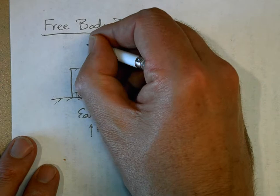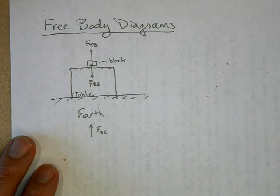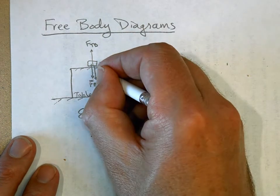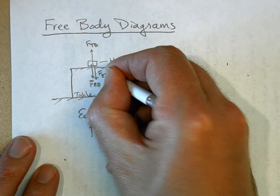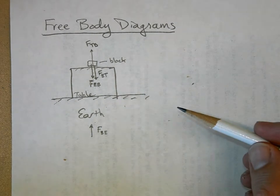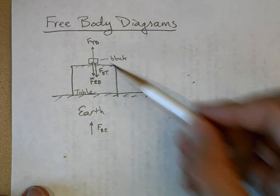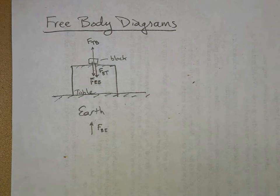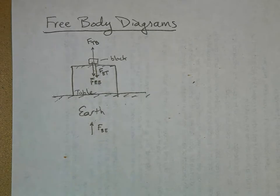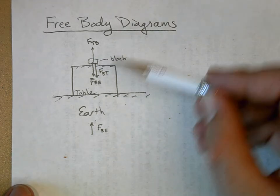The table pushes up on the block — this is the force of the table on the block. But for every force on one object, there's a force on the other object. So obviously the block is pushing down on the table — this is the force of the block on the table. This is what we call an interaction diagram. It shows all the interacting forces that are involved. I could draw the earth pulling down on the table and the table pulling up on the earth, but I'm going to ignore that right now because I want to focus on the block.